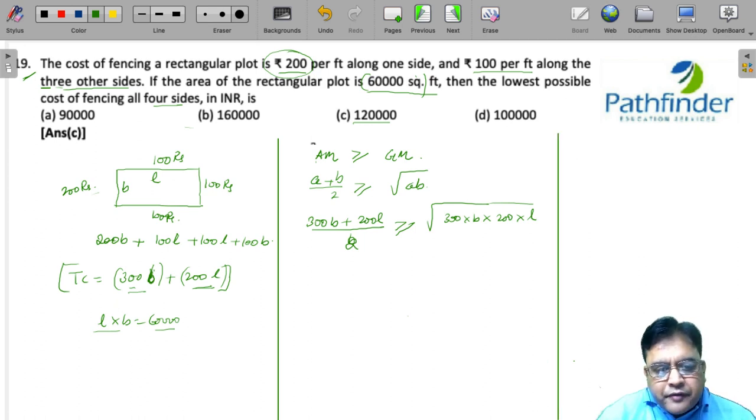Let us simplify this. What do you get? 300B plus 200L must be greater than equal to 2 times, this is B into L and this is nothing but the area which is already given to you.